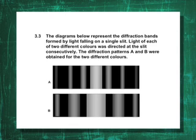We've got two diffraction patterns, A and B. Diagrams represent diffraction patterns formed by light falling on a single slit. The light of two different colors was directed, one color at a time, on the single slit. The diffraction patterns were obtained for the two different colors.